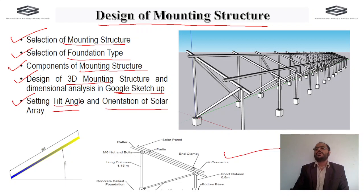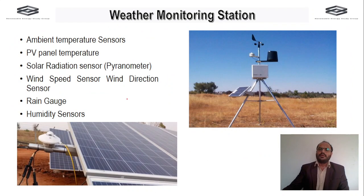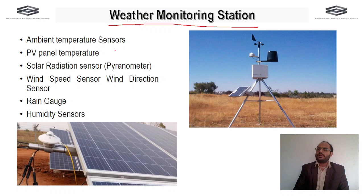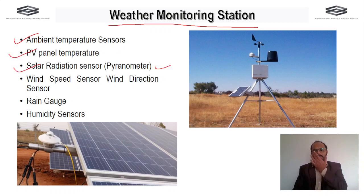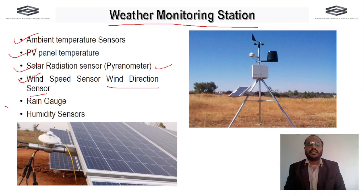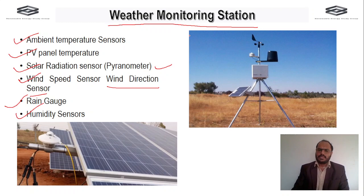The weather monitoring station is an essential part of a utility-scale solar power plant. We cover ambient temperature sensors, PV panel temperature sensors, solar radiation sensors including pyranometers, wind speed sensors, wind direction sensors, rain gauges, and humidity sensors — along with their required specifications in detail.